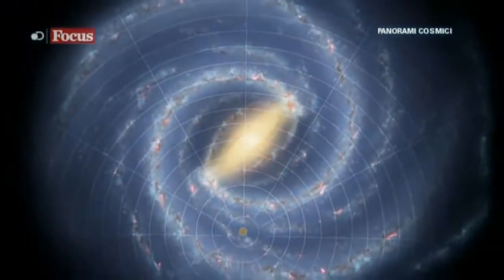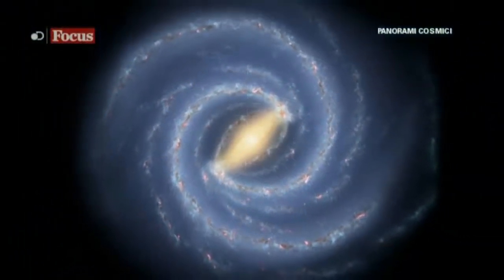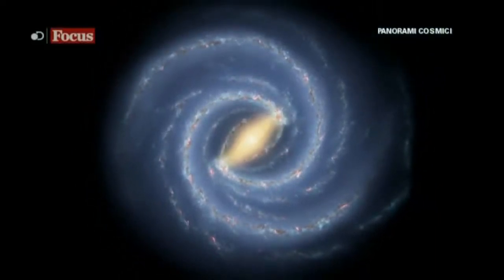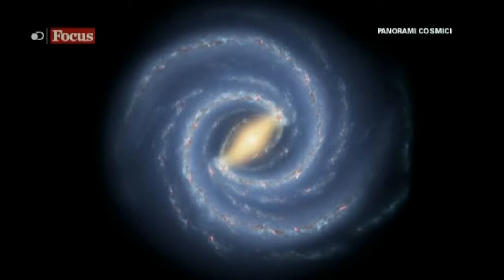Questo è il risultato, una visione artistica che mostra alla nostra galassia come una spirale barrata con due bracci principali. Uno di loro è il braccio di Perseo, il primo ad essere stato scoperto.